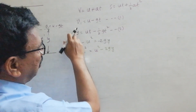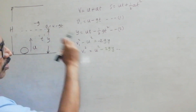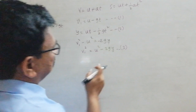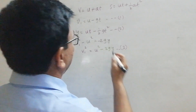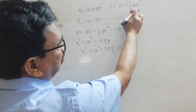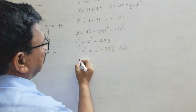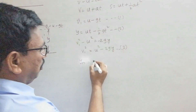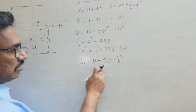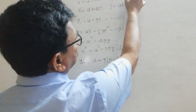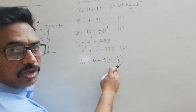So using either relation — the time-based one or the displacement-based one — depending on the given values, we can find V1. The expressions used are: V equal to U plus AT, S equal to UT plus half AT squared, and V squared minus U squared equal to 2AS. The last one is the displacement in the nth second: Y_n equal to U minus G times (N minus 1/2), analogous to S_n equal to U plus A times (N minus 1/2).